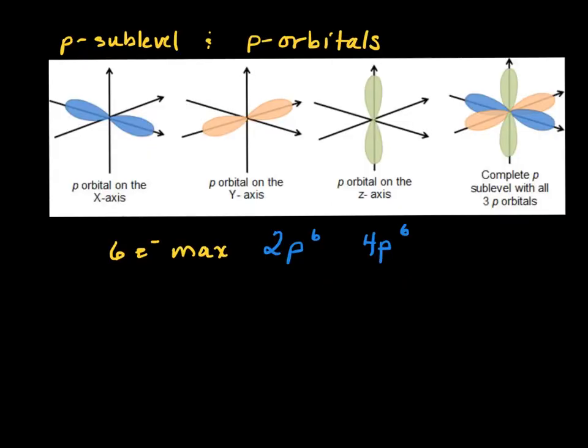The P sublevel is made up of three P orbitals. So this is the Px. This is the Py. And that is the Pz. They're the same exact shape. They're just oriented along the x, y, or z-axis. And if you put all three together, this is your P sublevel. Now remember, you can get two electrons per orbital. So the P sublevel can have up to six electrons. So 2P⁶, 2 is the energy level. P gives us the sublevel, or shape, and this is the number of electrons. The most you can put in a P is six. You could have fewer. You could have something like 3P⁴, four electrons, and the P sublevel on the third energy level.